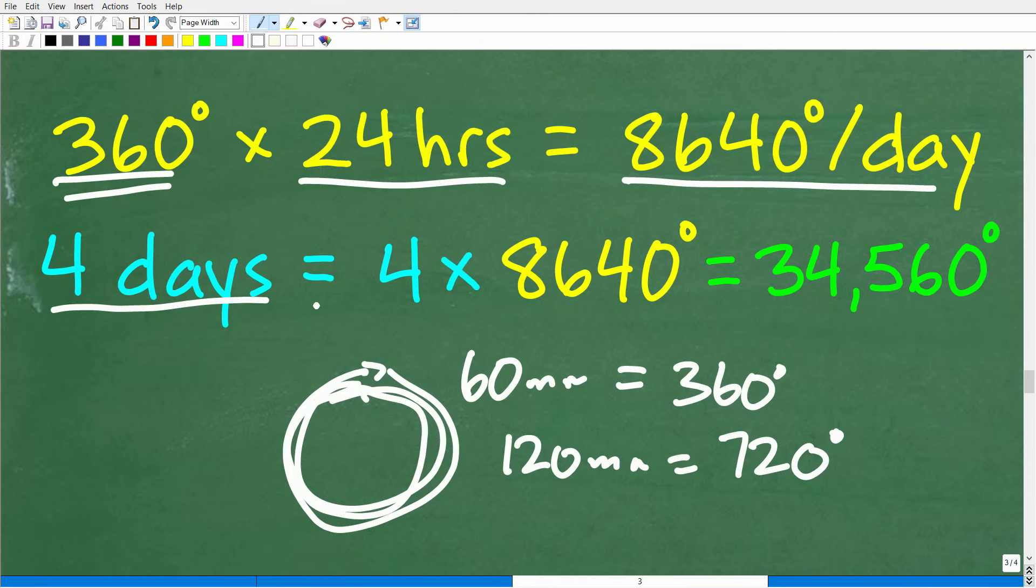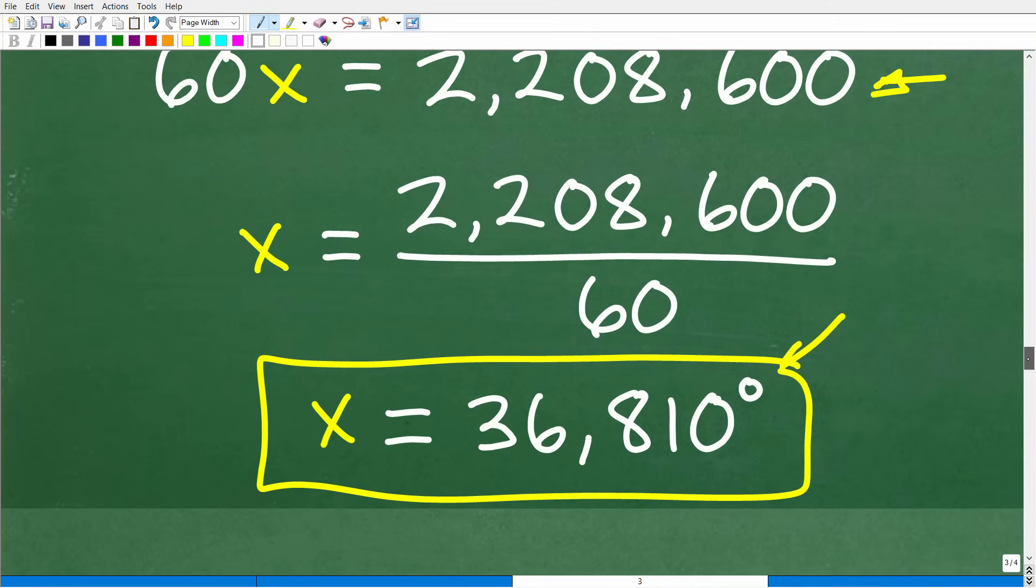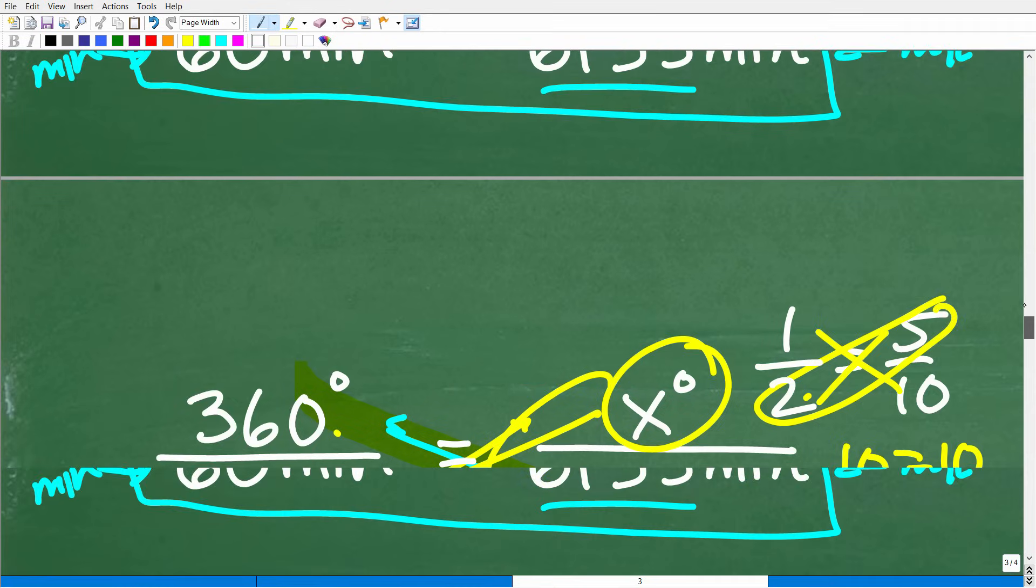Okay. Now we know we have at least four days in this problem. So four times 8,640 degrees is 34,560 degrees. So our answer is reasonable. There is a lot of degrees that are covered by that big hand over this period of time.